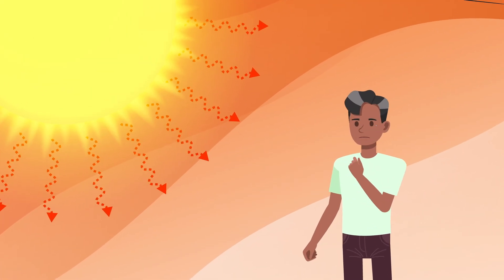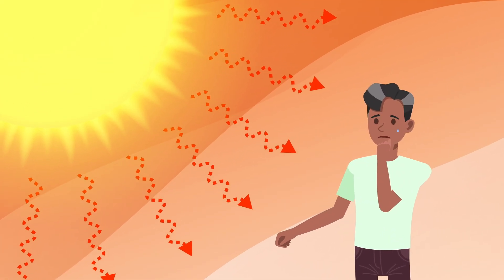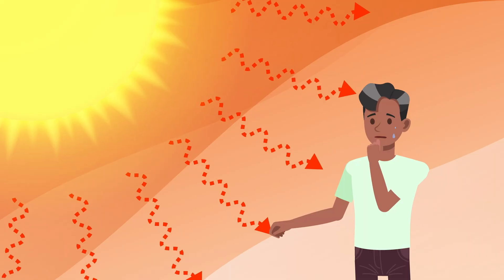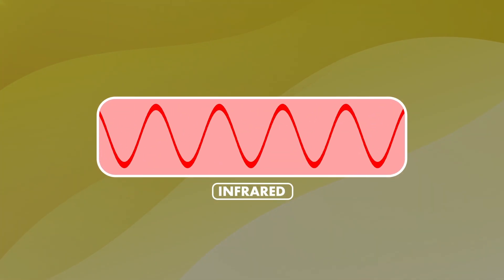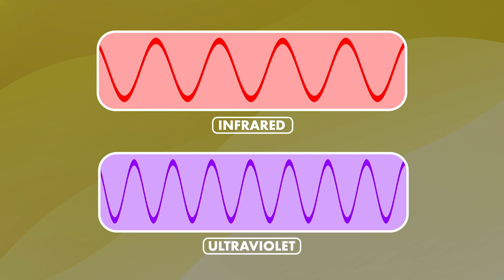About 40 to 50 percent of solar radiation takes the form of visible light, which we experience as warm, glowing sunshine. Most of the remaining radiation is released as infrared or ultraviolet waves that are either too short or too long for our eyes to see.